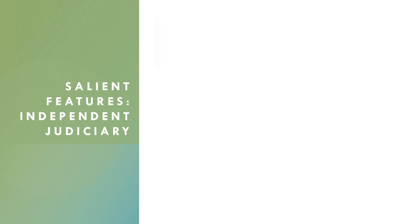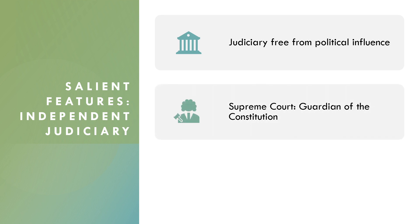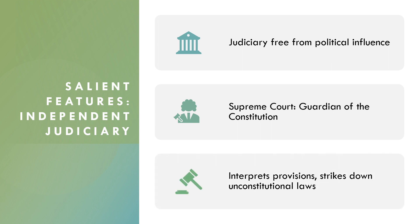The sixth one is independent judiciary. An independent judiciary, free from political influence, is crucial for upholding the rule of law and safeguarding fundamental rights. The Supreme Court acts as the guardian of the constitution, interpreting its provisions and striking down laws that violate them.